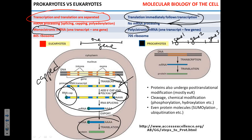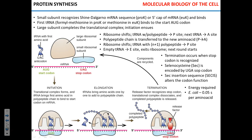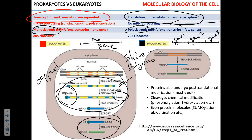A student asked: in prokaryotes, what does the ribosome use to decide where to start? In prokaryotes, the site of recognition for the ribosome is the so-called Shine-Dalgarno sequence — a specific structure in the RNA that assumes a shape the ribosome can recognize, unlike the 5' cap used in eukaryotes.